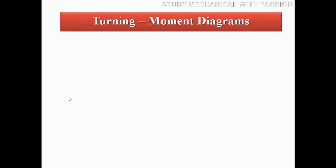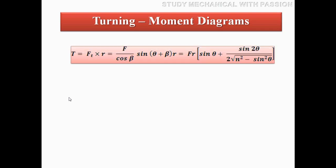The next topic is the turning moment diagram. The turning moment diagram comes from the dynamic analysis of the slider-crank mechanism — this is the engine force analysis. The equation is: Tn = Ft × R, where Tn is the turning moment, Ft is the crank effort, and R is the crank radius.